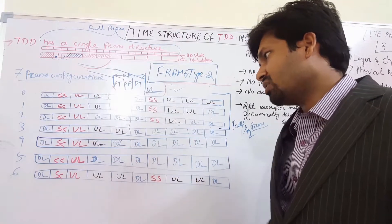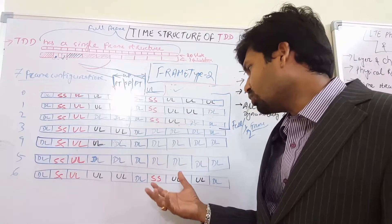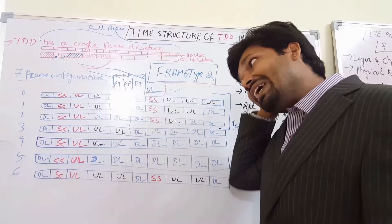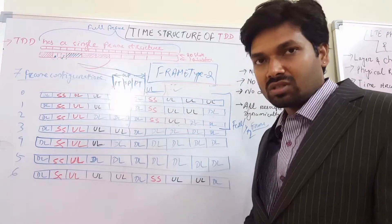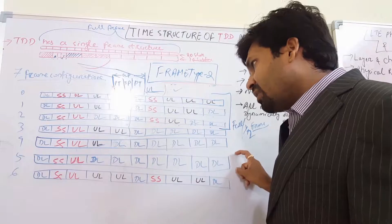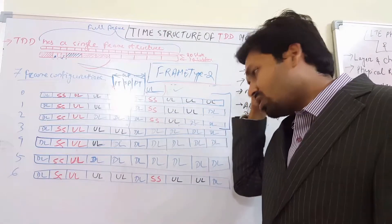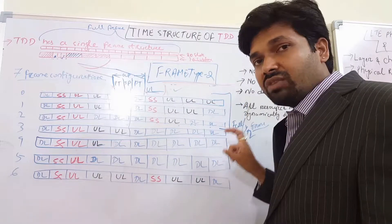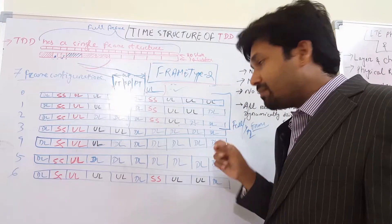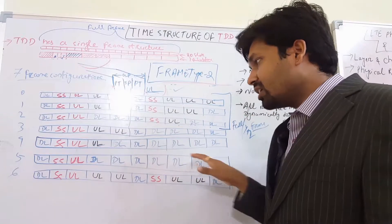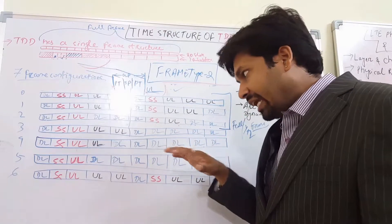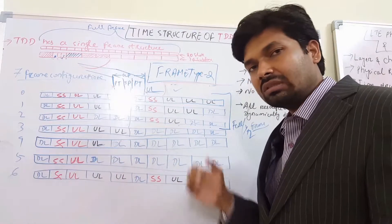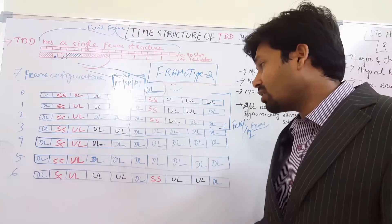In frame configuration type 5, which is very popular in terms of downlink throughput, we have the maximum downlink subframes: 8 downlink subframes, 1 uplink subframe, and 1 special subframe. This is the secret behind the maximum throughput of many operators. When using frame type 5, we get maximum throughput because we are allocating maximum bandwidth — 8 subframes — to the downlink.